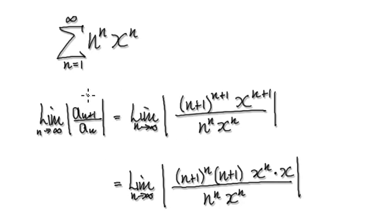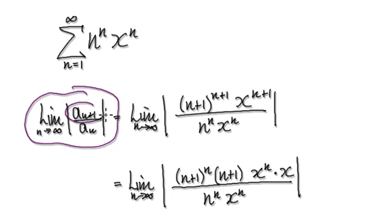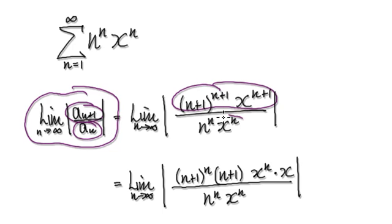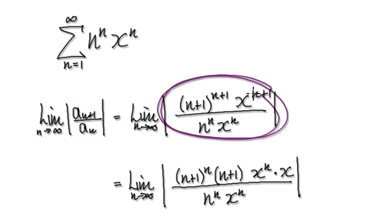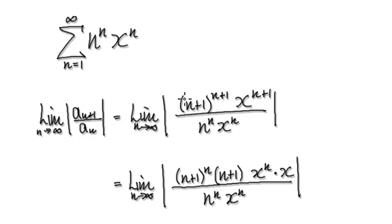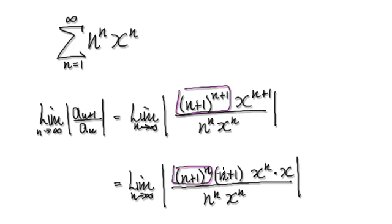When it comes to the ratio test, we always need to compute this value here: get your a_(n+1) divided by your a_n. Now it's just a matter of tidying this up, looking at this block here.